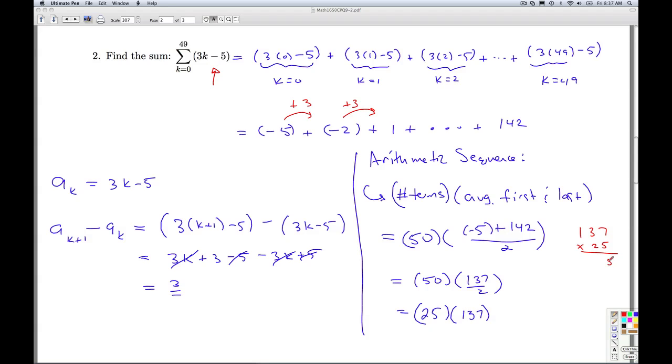5 times 7 is 35. Carry the 3. 5 times 3 is 15 and 3 is 18. And 6. 2 times 7 is 14. Carry the 1. 2 times 3 is 6. 5, 12, 14, 34. And so the answer is 3425. Okay. So that'll do it for number 2.